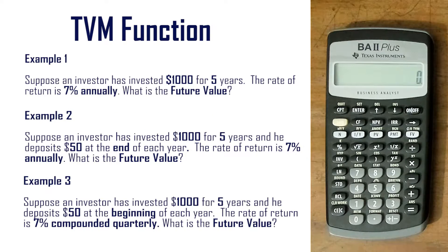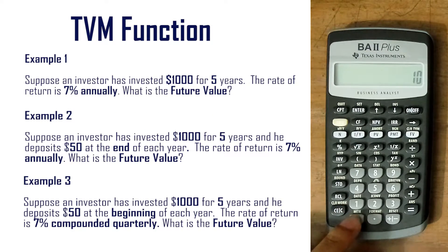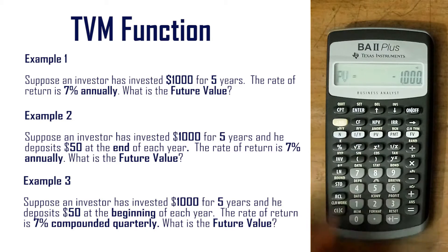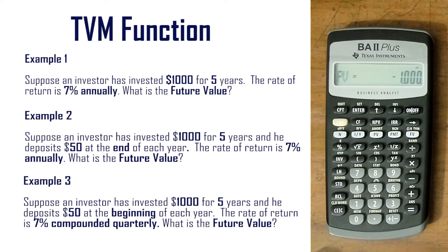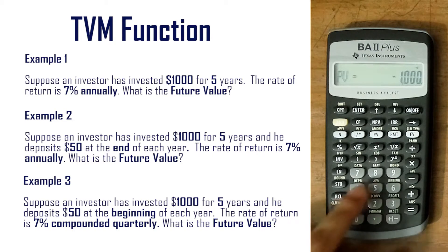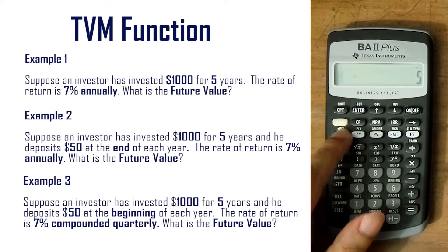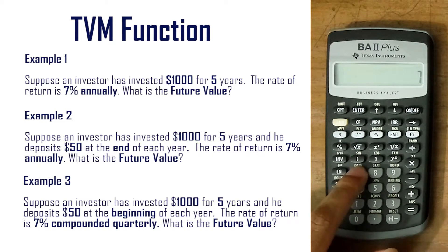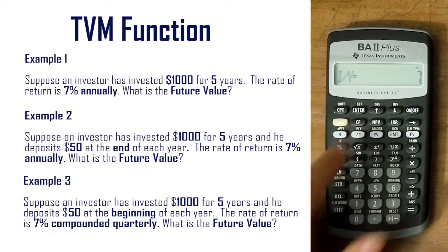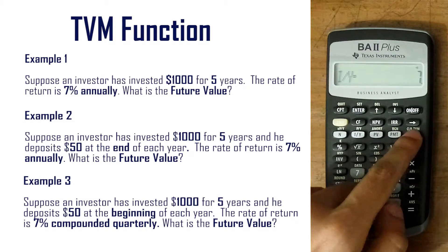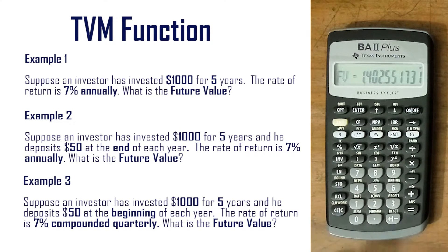In Example 1, the investment is $1000, which we input as a negative PV because the investor is depositing this amount. The term is 5 years, so n = 5, and the interest rate is 7 for i/y. Then we press CPT then FV, and the result is 1402.55.